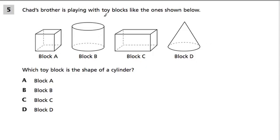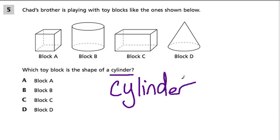Here, Chad's brother is playing with toy blocks like the ones shown below. Which toy block is the shape of a cylinder? This word right here, C-Y-L-I-N-D-E-R, is cylinder.